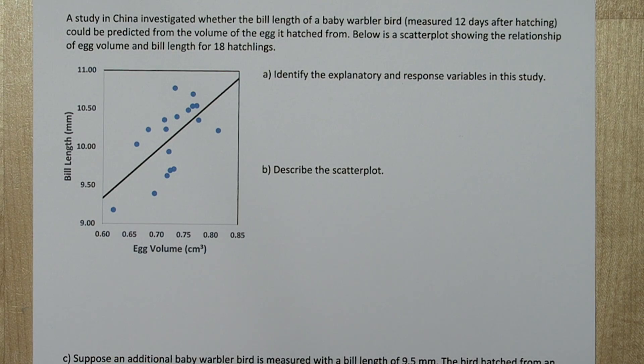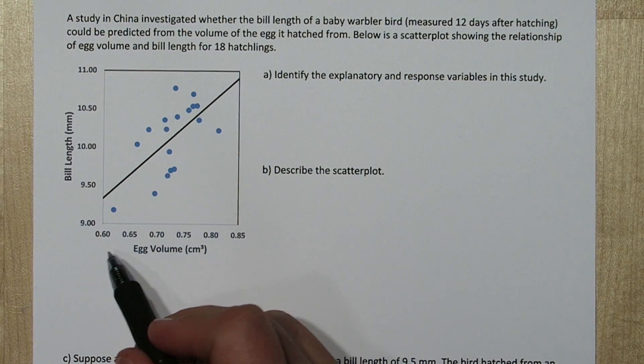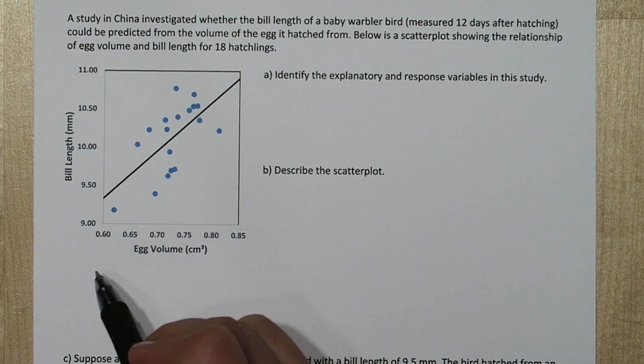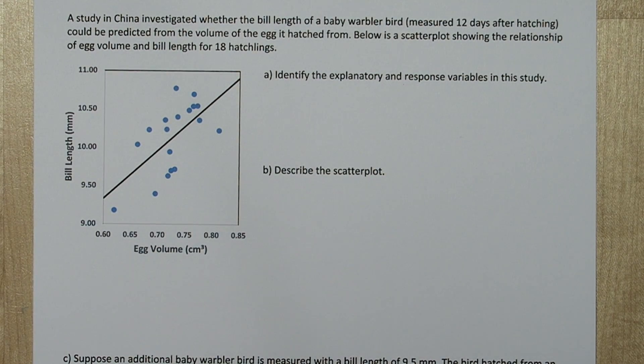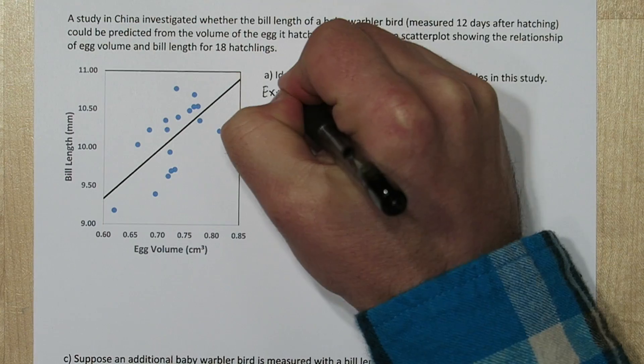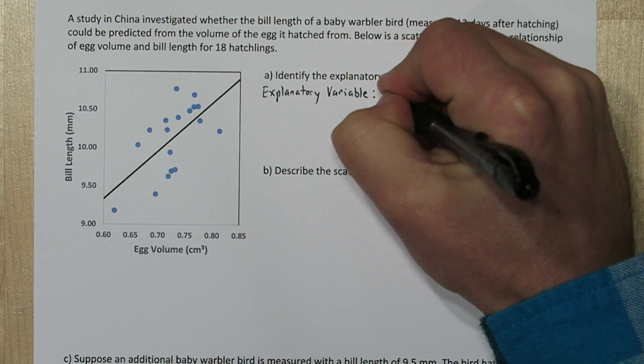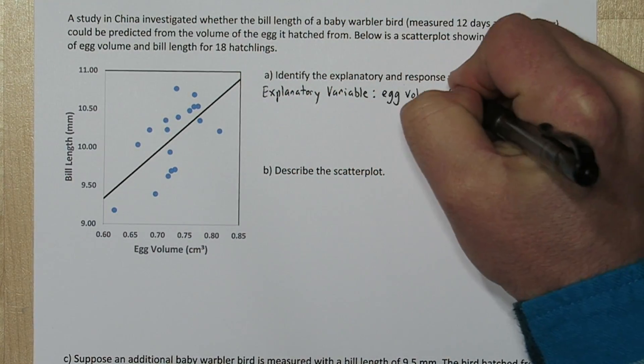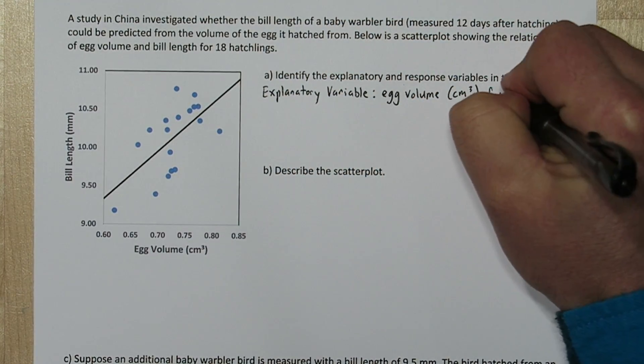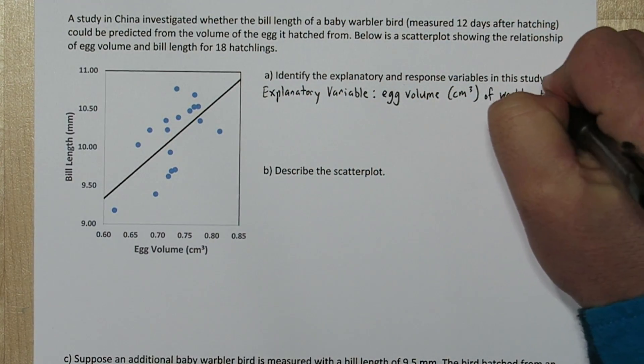To find the explanatory variable, always look at the x-axis. So in this case, our explanatory variable is the egg volume in centimeters cubed of these wobbler birds.